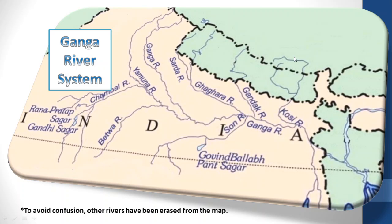Look at the Himalayan tributaries of Ganga — the Ghagra, Gandak, and the Kosi. And the peninsular tributaries of Ganga — the Chambal, Betwa, and Son — these tributaries come from Peninsular India.